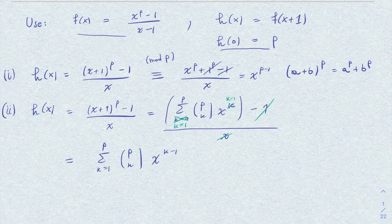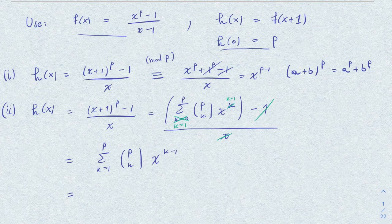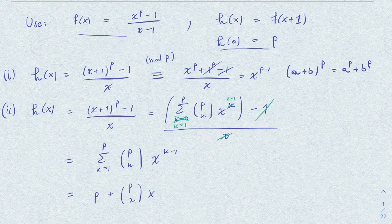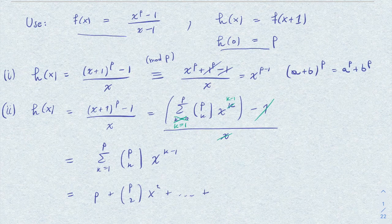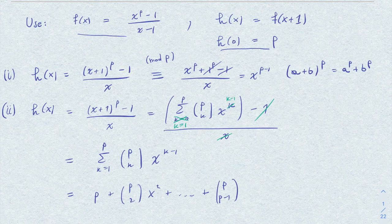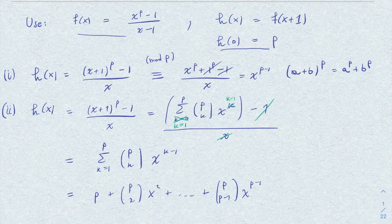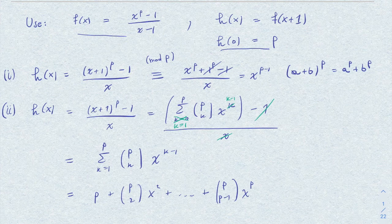Now, how does this go? Well, when k is equal to 1, we have p choose 1, which is p, of course. Then we have p choose 2 times x, and so on, until we get p choose p minus 1 times x to the power p minus 2.